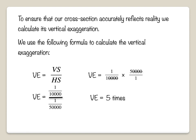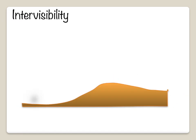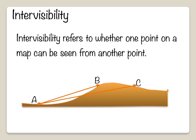Once we've drawn the cross-section, we can work out intervisibility. Intervisibility means: if we're standing at point A, can we see point B? Can we see point C? Intervisibility refers to whether one point on a map can be seen from another point. You can surmise it from the map itself, but cross-sections help us see exactly whether we can see a feature or not. By looking at all of these features, you are able to gain important map skills based on what you have already learned about how height is indicated on the map.